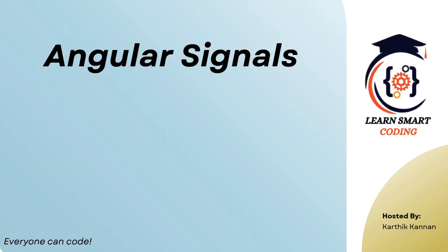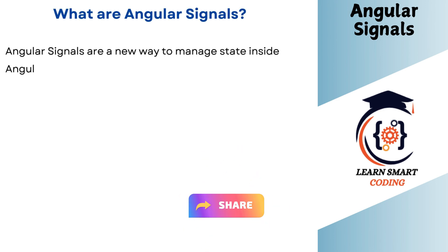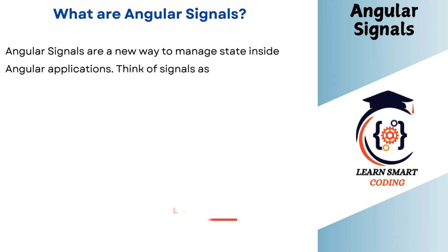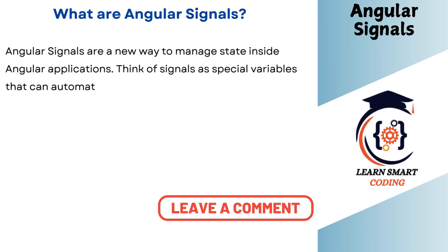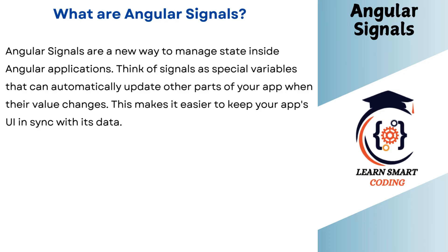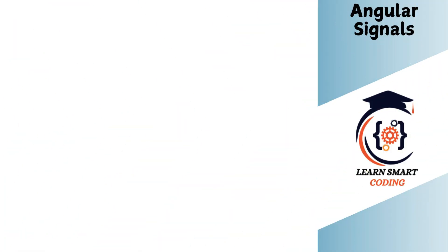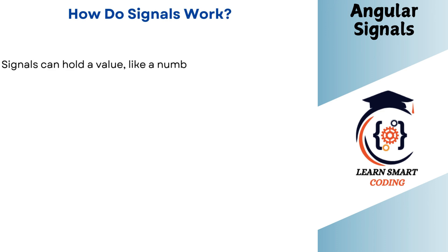First, we will see Angular Signals. Angular Signals are a new way to manage state inside the Angular application. If the variable is updated and you use that variable in any section, the application will automatically update. That is Angular Signals. You can sync your data in the UI and improve performance. An Angular Signal variable can accept any value — a string, a number, or any type.